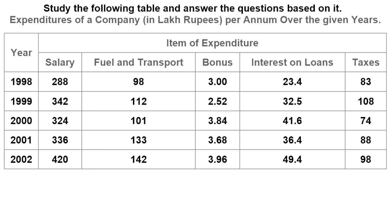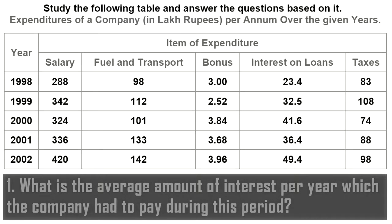Study the following table and answer the questions based on it. The table shows expenditures of a company in lakh rupees per annum over the years 1998, 1999, 2000, 2001, and 2002. The categories of expenditure are salary, fuel and transport, bonus, interest and loans, and taxes.